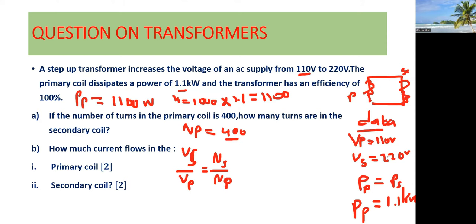So let's say VS, that's 220, over VP, that's 110. Which is equal to the number of turns on the secondary coil, that's what we are looking for, and the number of turns on the primary coil is 400. So when you have two fractions separated by an equal sign, what you do is you simply cross-multiply. So the 400 will be multiplied by 220. When you multiply those two, 400 times 220, that gives you 88,000 which is equal to 110 times NS.